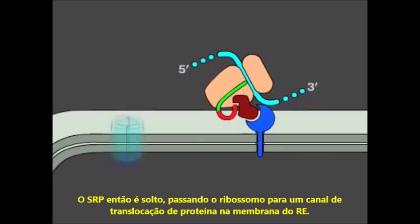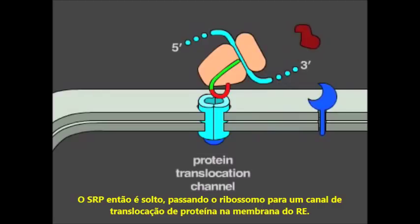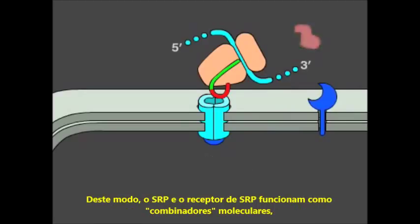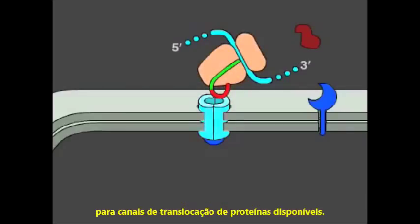The SRP is then released, passing the ribosome to a protein translocation channel in the ER membrane. Thus, the SRP and SRP receptor function as molecular matchmakers, connecting ribosomes that are synthesizing proteins containing ER signal sequences to available ER translocation channels.